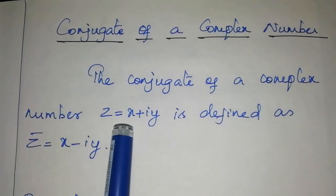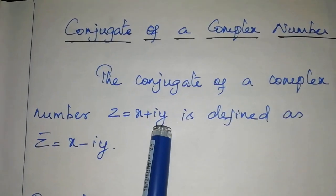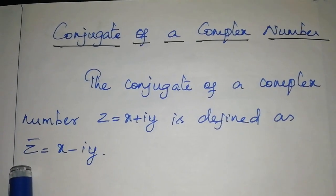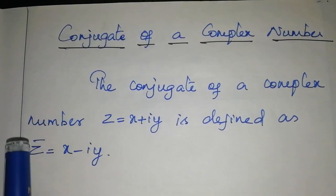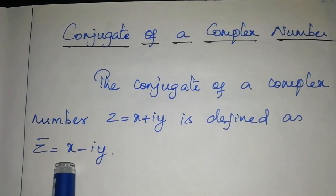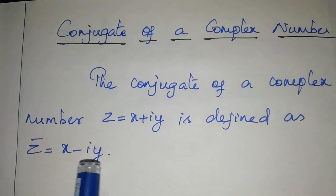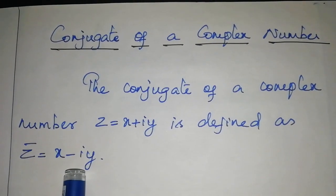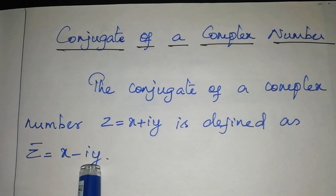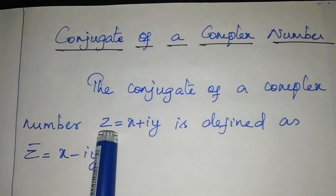So z is equal to x plus iy, and its conjugate z bar is equal to x minus iy. That is, z bar is obtained by changing the sign of the imaginary part of the complex number z.